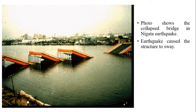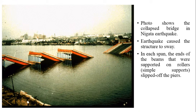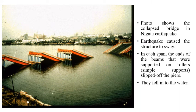The earthquake caused the structure to sway. In each span, the ends of the beams that were supported on rollers, that is simple supports, slipped off from the piers and fell into the river.